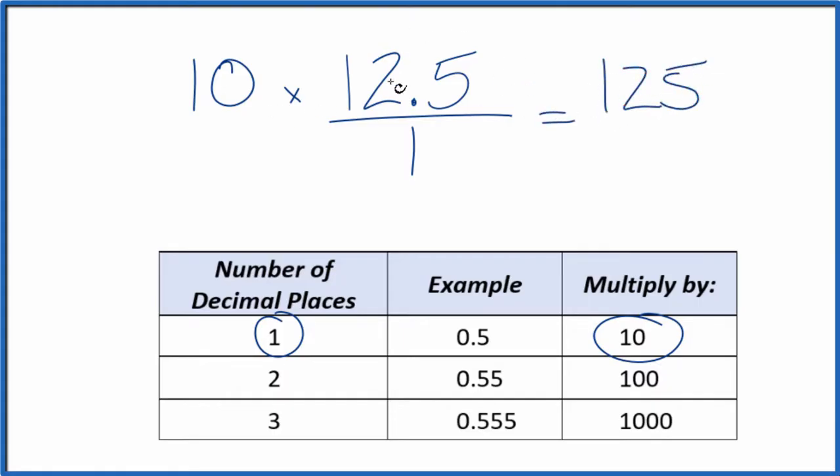We can't just multiply the numerator by 10, though. We also have to multiply the denominator. So 10 over 10, that's equal to 1. We're not changing the value, we're just putting it in a different format. So 10 times 1 is 10, and now we have a fraction: 125 over 10.